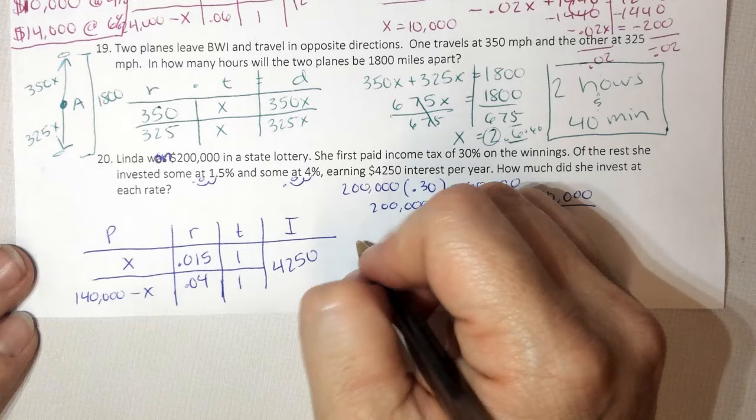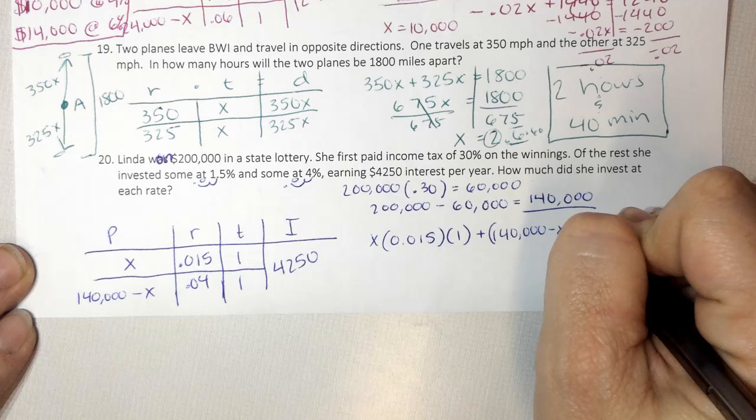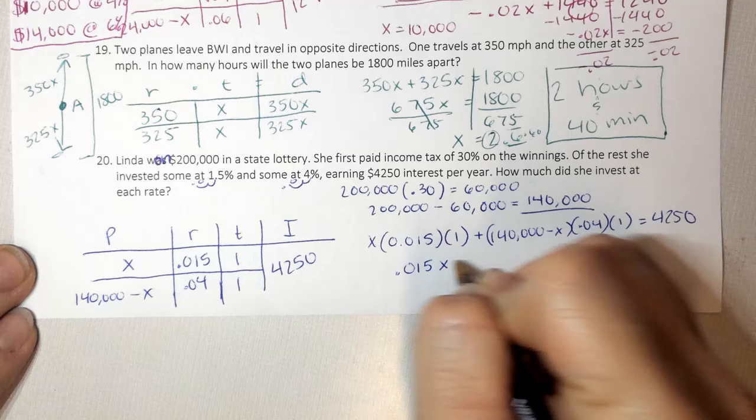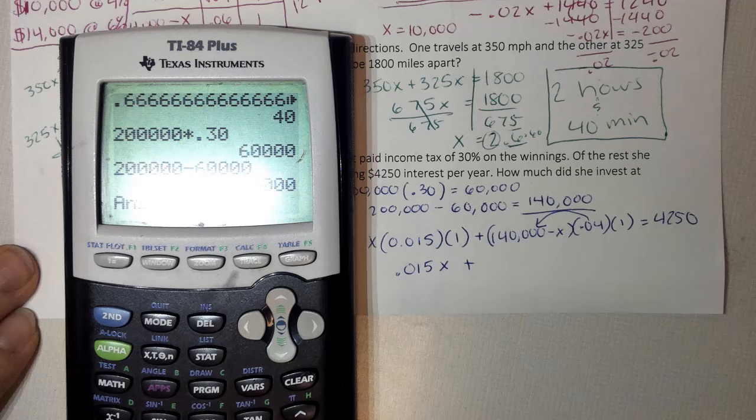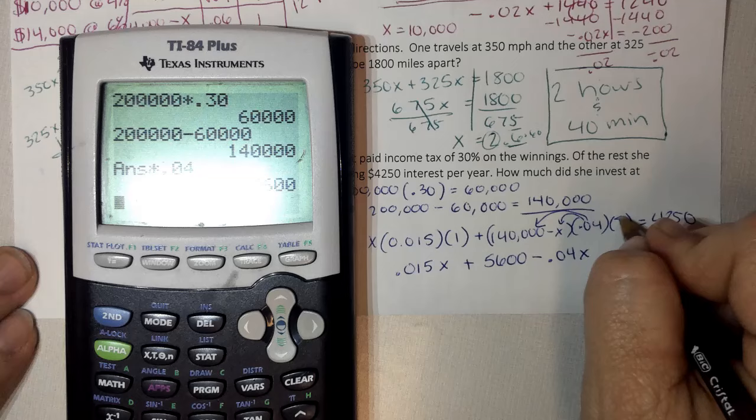This just gives me 0.015x plus, I'm going to distribute, so 140,000 times 0.04, that's 5,600, minus 0.04x. Because 1 times 0.04, we can ignore those. Equals 4,250.